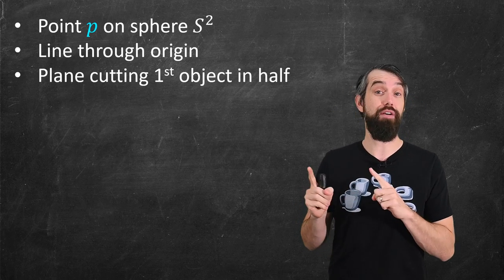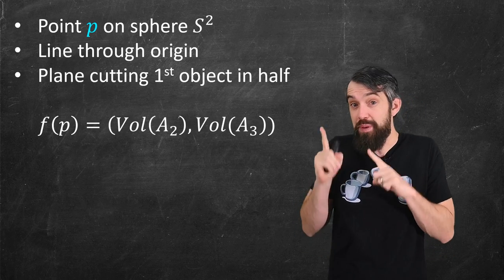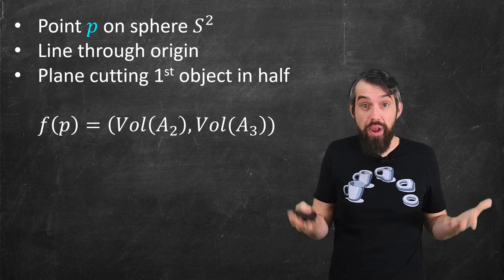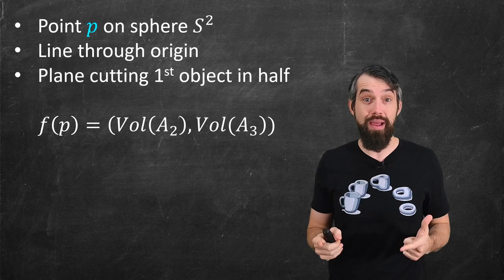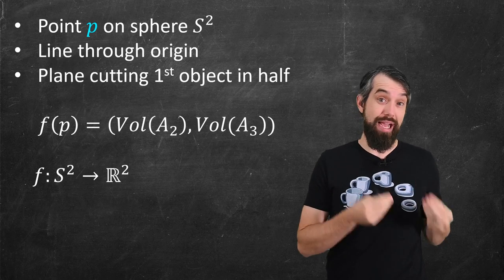Now what I'm going to do is construct a function. Its input is p. That is, its input is a point on the surface of the sphere. But its output is something two-dimensional. That is, this is a plot from S^2 to R^2. From the sphere to the two-dimensional real space.